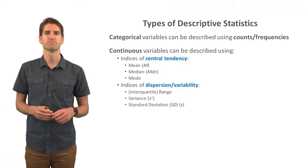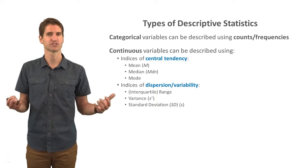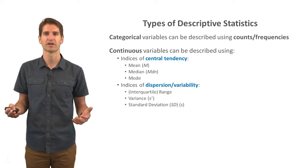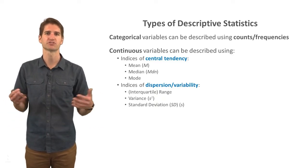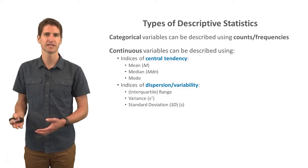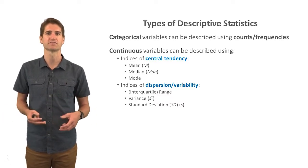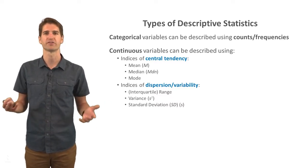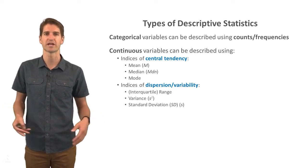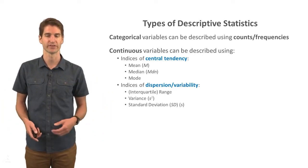Categorical variables can be described using counts and frequencies — this is the most classic way of doing this. Whereas continuous variables can be described using different indices of central tendency, such as mean, median, and mode, or indices of dispersion or variability, such as the interquartile range or simply the range, the variance, and standard deviation.